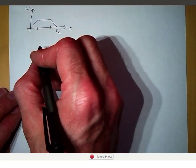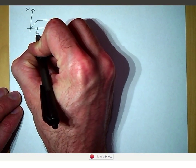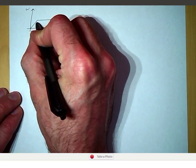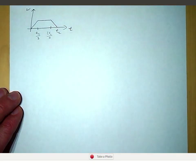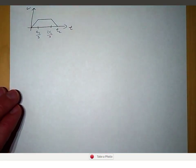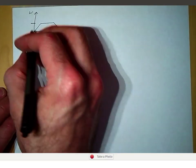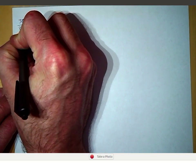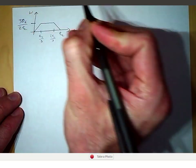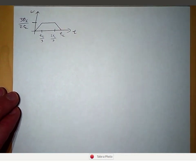For an equal parts trapezoidal profile, tc over 3 is the end of the first period and 2 times tc over 3 is the end of the second period. The maximum speed in this case, where we have equal parts, is equal to 3 times theta_d divided by 2 times tc, where theta_d is the total displacement desired from the motor.